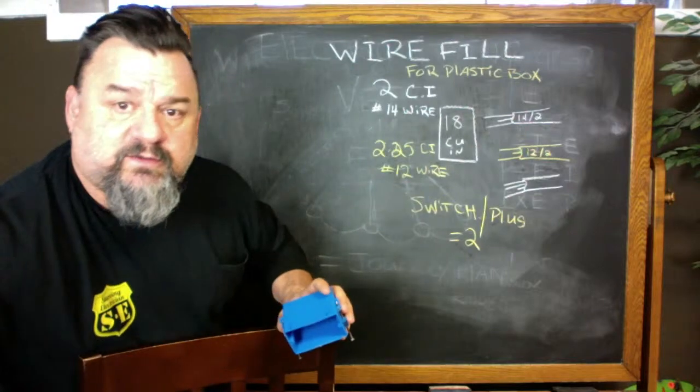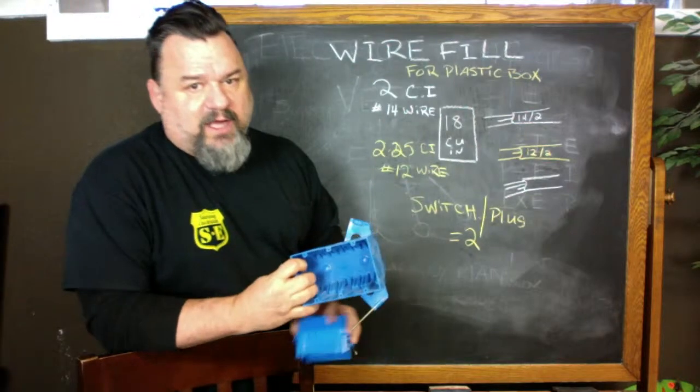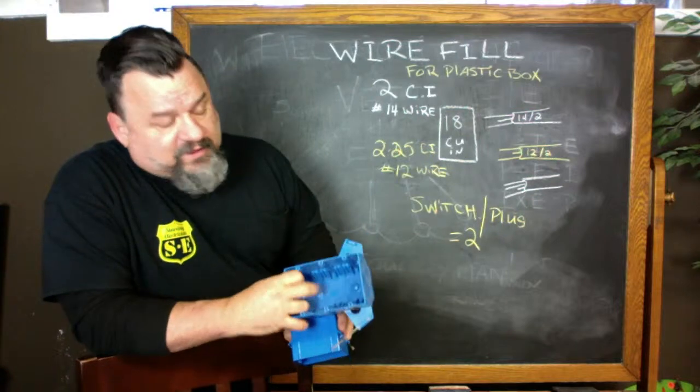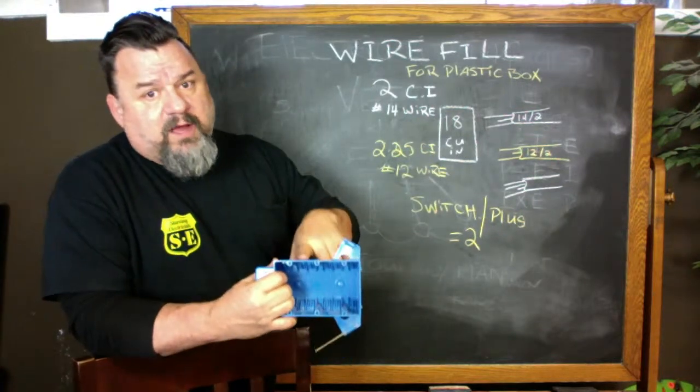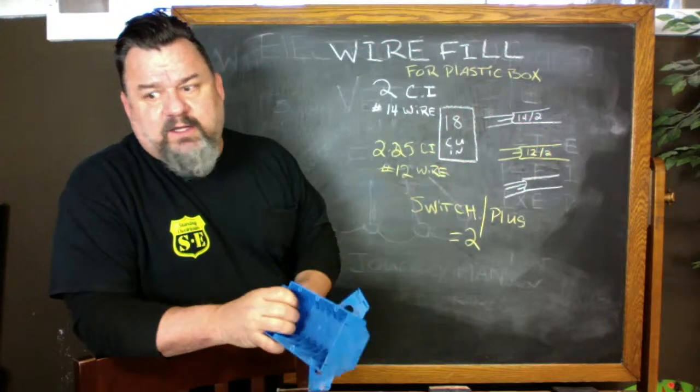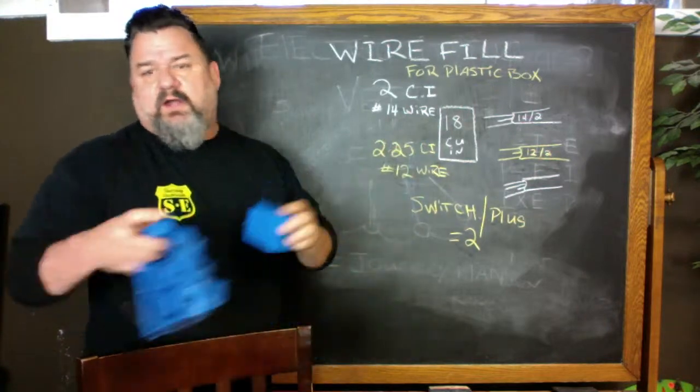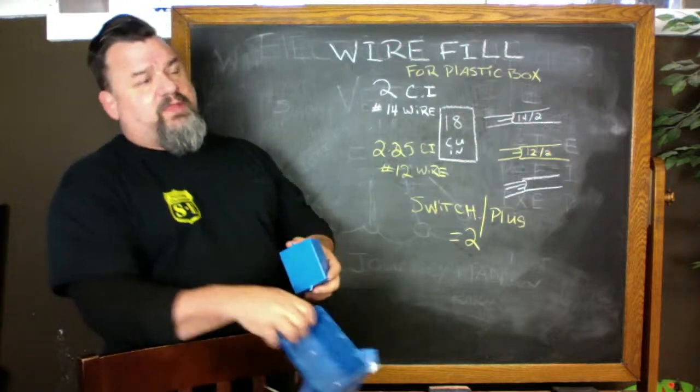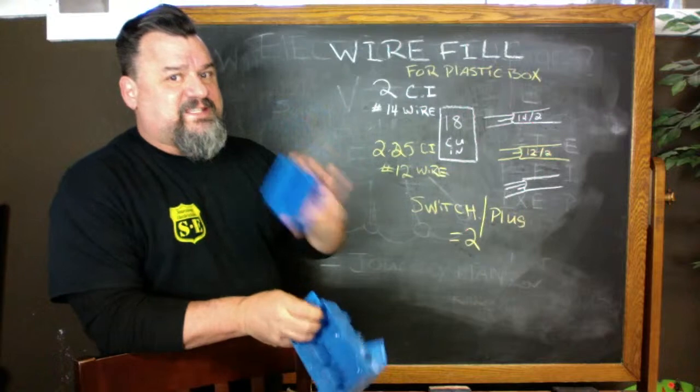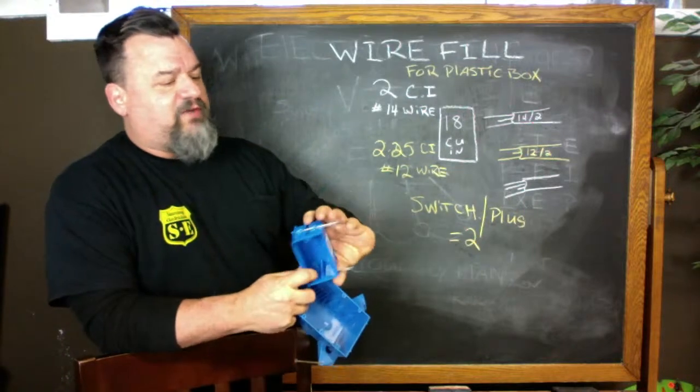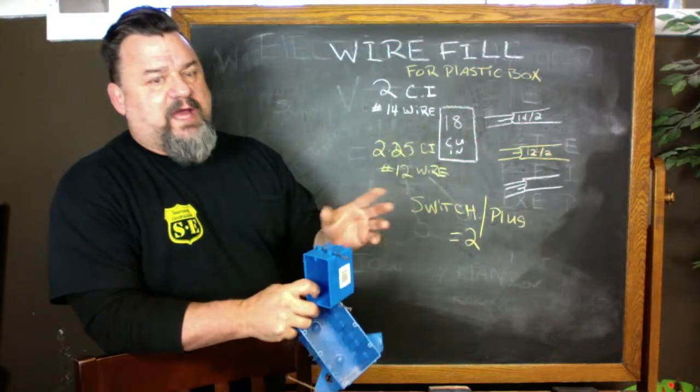I have a three gang switch box. They're all printed inside there. You have to know what the cubic inches are or your volume of your box. So they come printed on there. It's as simple as this. There's other applications. If you've got steel boxes, how shallow they are, inside, outside, there's all kinds of different applications, but this is the quick and dirty of wire fill.